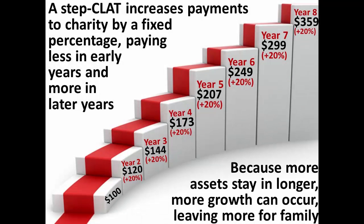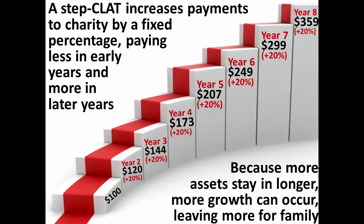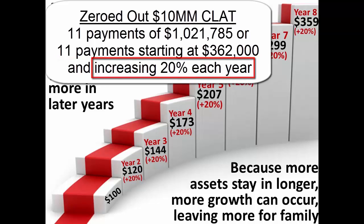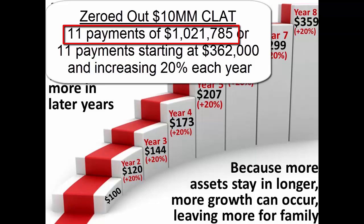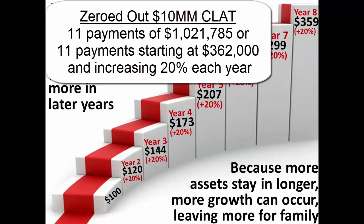For example, the IRS has approved using annual 20% increases in the charitable payment amounts. Returning to the previous example from the previous lecture, a zeroed-out charitable lead annuity trust with a $10 million initial transfer could be generated by 11 annual payments starting at $362,000 a year and increasing by 20% each year. Taking this approach, instead of paying the flat annuity rate of $1,021,785 per year, means that the charity receives lower payments at the start of the trust but larger payments at the end. For instance, the first annual payment would be $362,000, but the final annual payment would be $2,241,409.